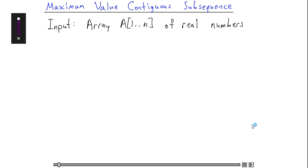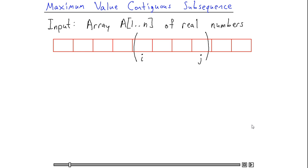In the maximum value contiguous subsequence problem, I'm given as input an array of n real numbers. What I'd like to find is a contiguous subsequence from position i up to position j which has the maximum sum.